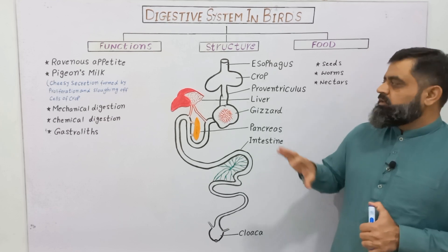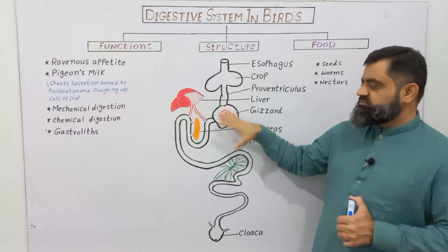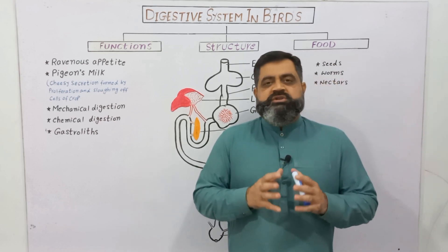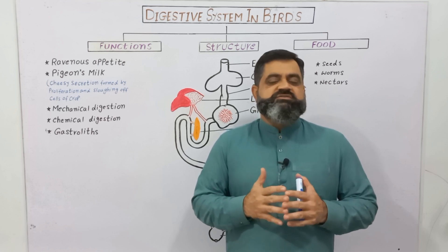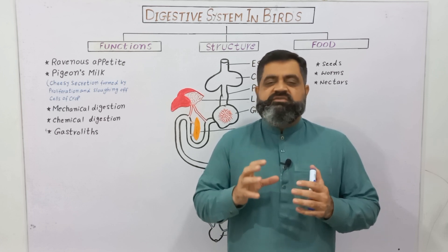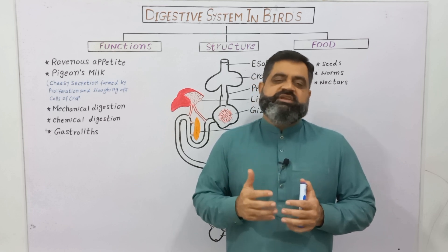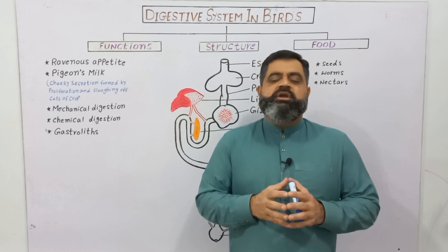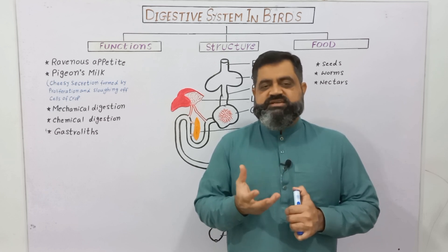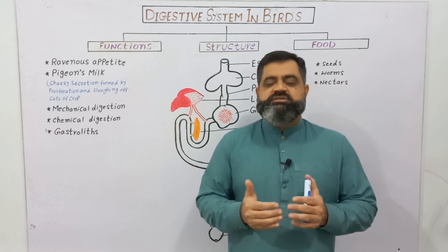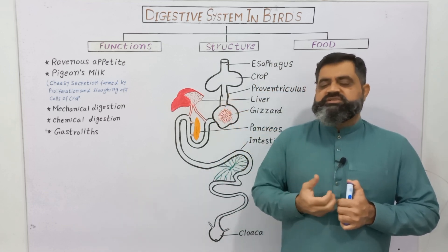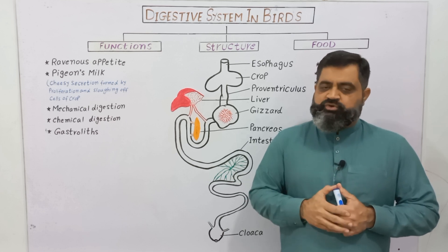Birds have a very active digestive system, which is necessary to produce large amounts of energy for the body. Flight is a very difficult task — it works against gravity and requires a lot of energy. To support endothermy and produce a lot of heat, birds eat large amounts of high-energy foods like seeds. That is why their digestive system is very active, fast, and strong — to provide maximum energy to the body.